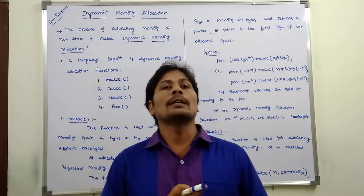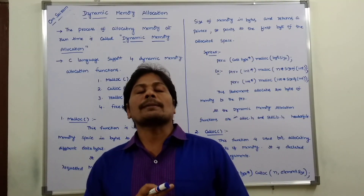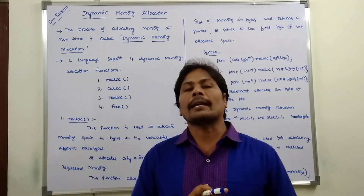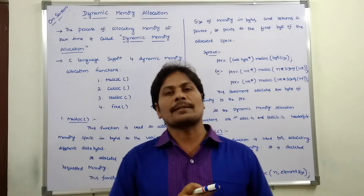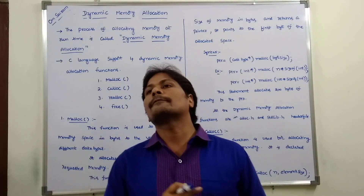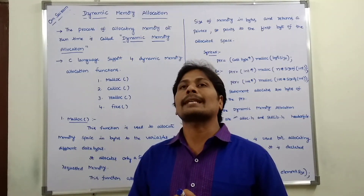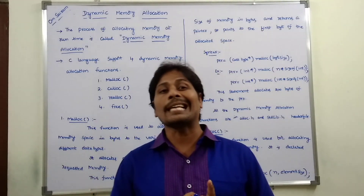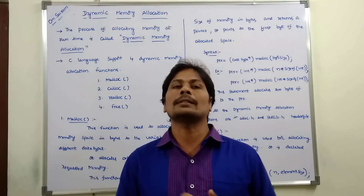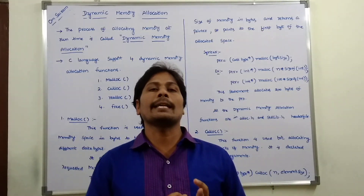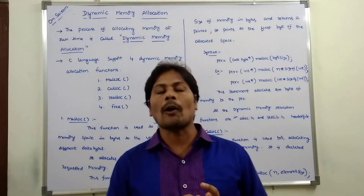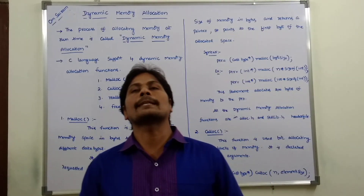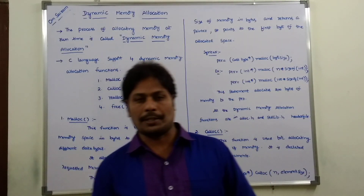There are four types of dynamic memory allocation functions. First is malloc, second is calloc, third is realloc, and fourth is free.